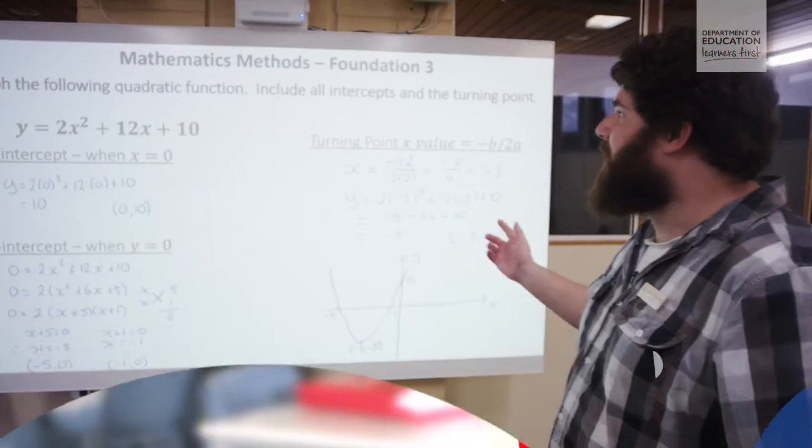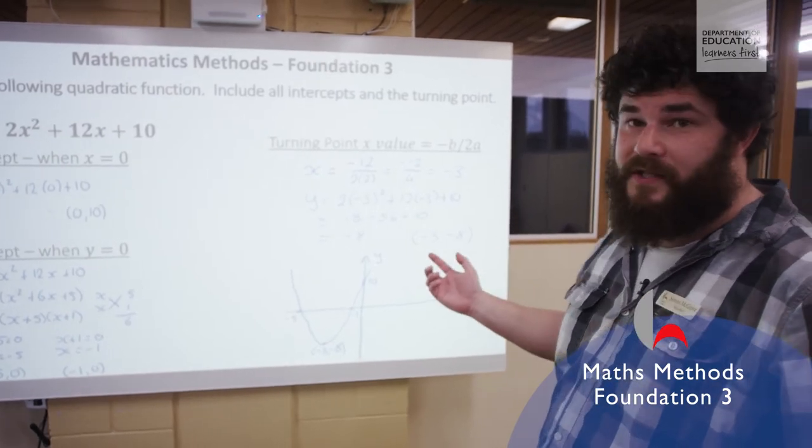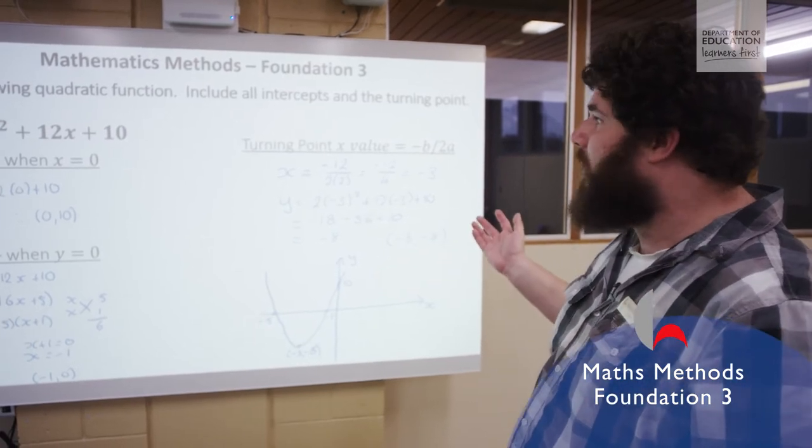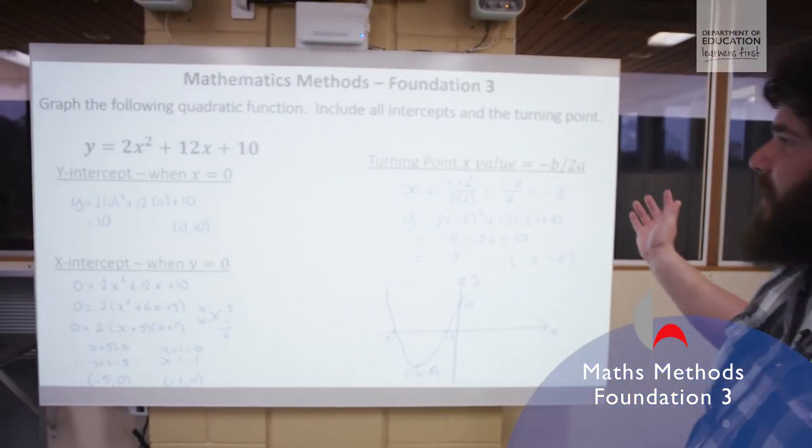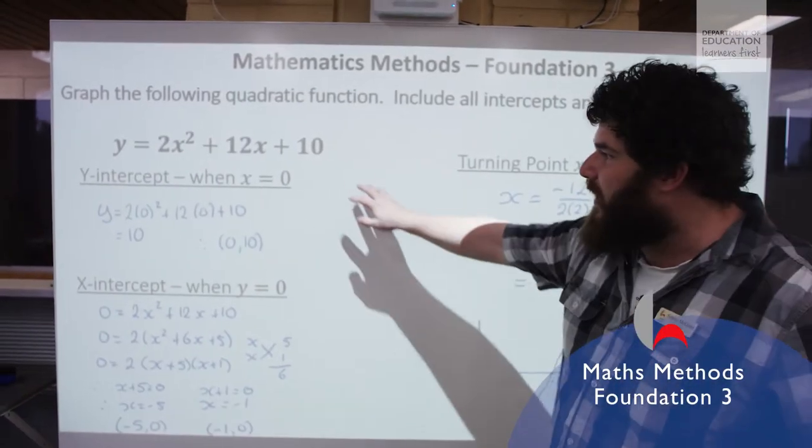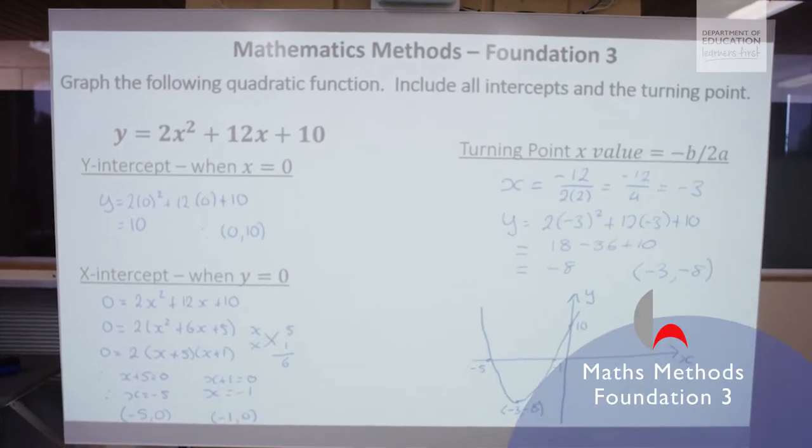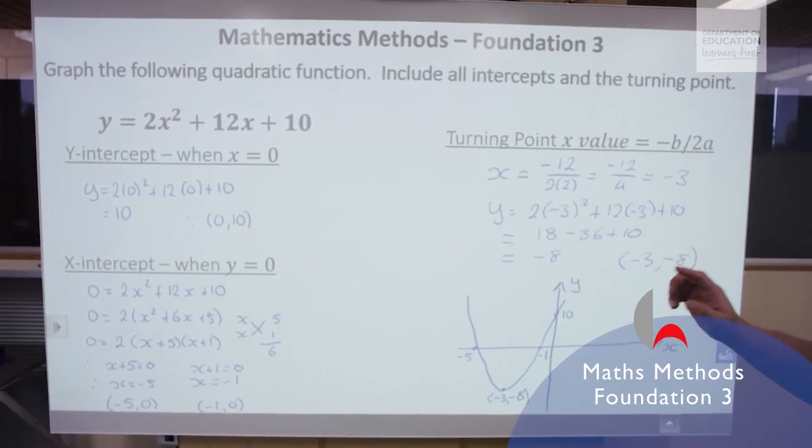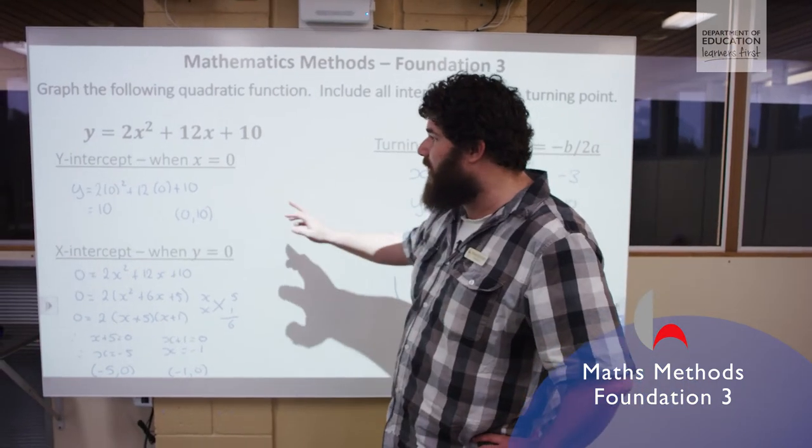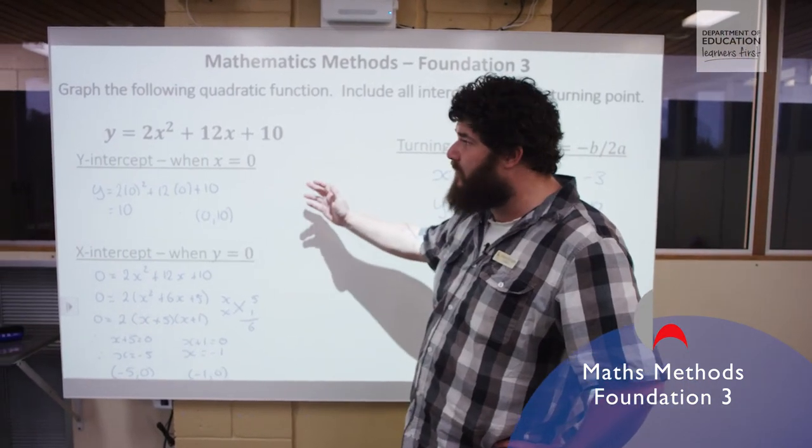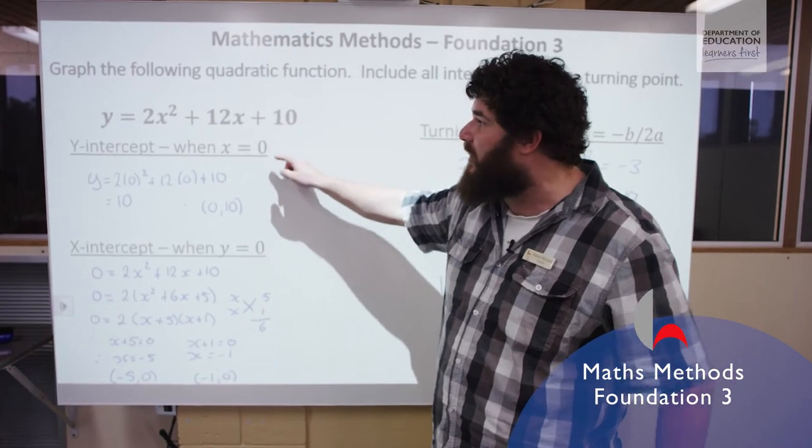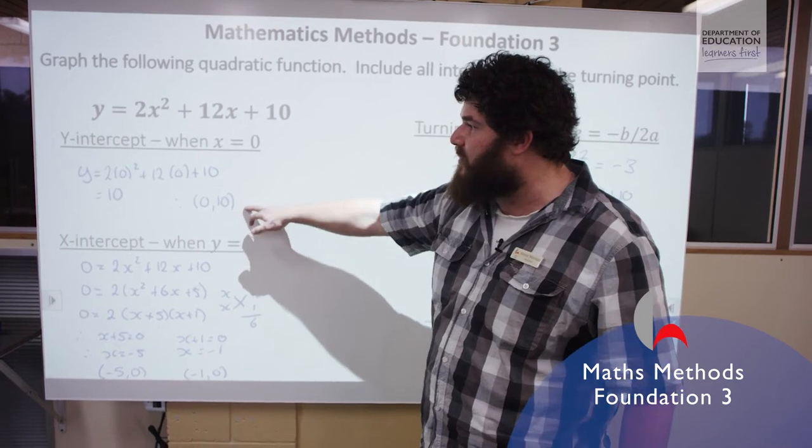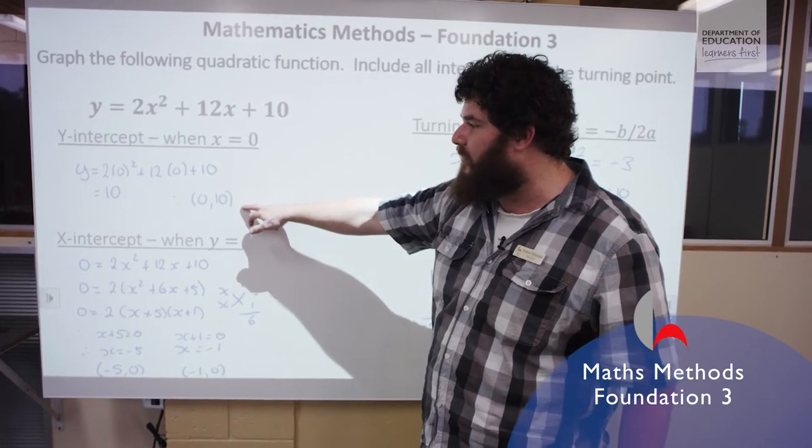So this is an example of a Methods Foundation 3 type question where we are asked to graph the following quadratic including all of the important points, so the intercepts and the turning point. So we've got our quadratic here, 2x squared plus 12x plus 10. So the first thing we need to do is we need to find the x-intercept or the y-intercept. So to find the y-intercept we're going to let x equal 0. So everywhere where there's an x we're going to put in a 0 which leaves us with y is equal to 10. So we can say that the y-intercept is 0,10.